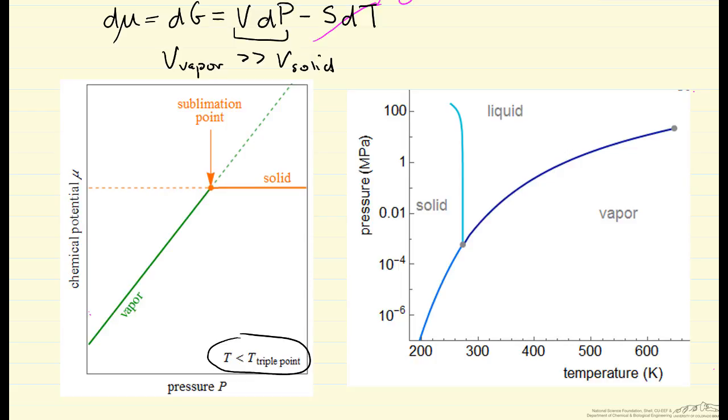On the pressure-temperature diagram, this is the triple point. We have to be lower than the triple point temperature to have solid-vapor equilibrium.